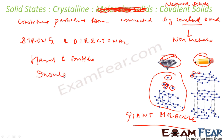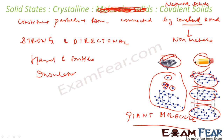They are insulators — but graphite is the exception. Graphite is generally soft because it has a layered structure where the layers can slip over each other. And graphite conducts electricity as well. But in the general case, covalent solids are very hard, brittle, and insulators.